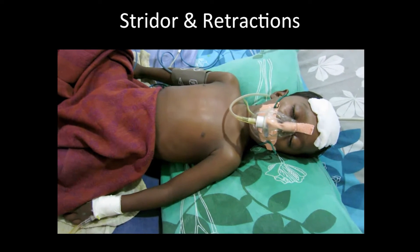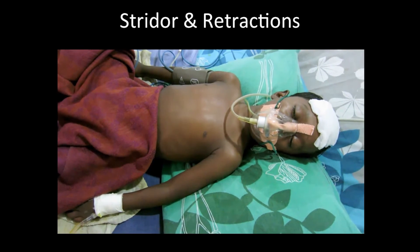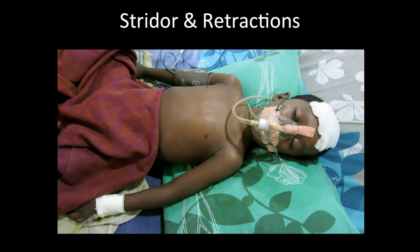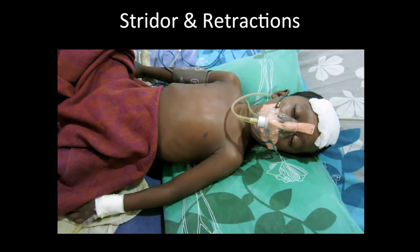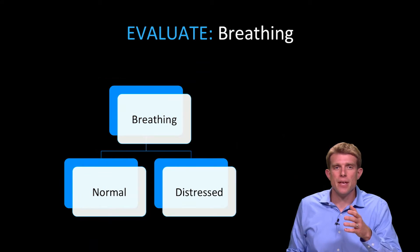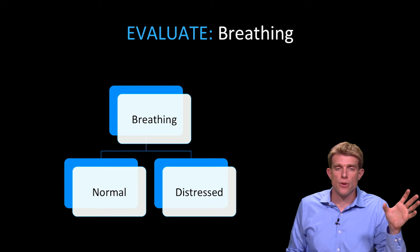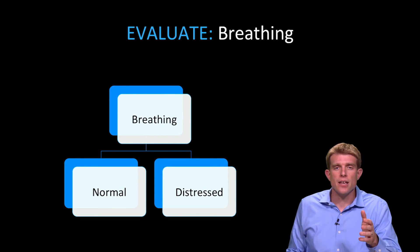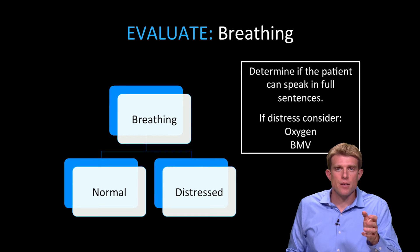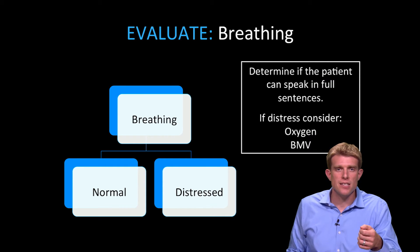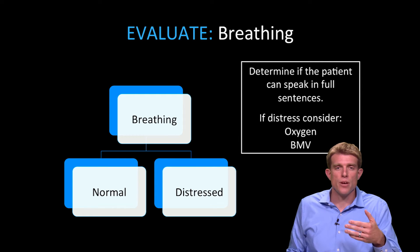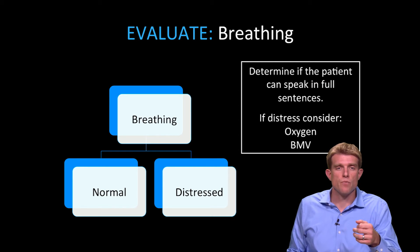You can also see just on initial look that this patient is having a lot of retractions and difficulty breathing, so their breathing is affected by their airway problem. As we move from A to B, or breathing, we want to determine: is their breathing normal or is it distressed? Again, the simplest way to do that is to ask the patient just to talk to you. If they're able to speak in complete sentences, that's generally a sign that their breathing is okay. If they have to stop every few words to take a couple of breaths, that implies breathing is abnormal, and we want to consider immediate interventions like oxygen or positive pressure ventilation.